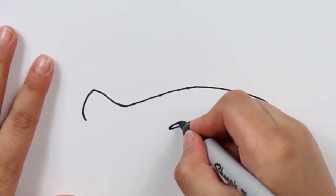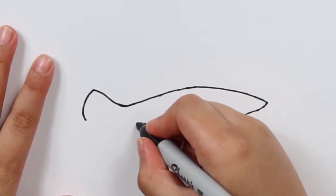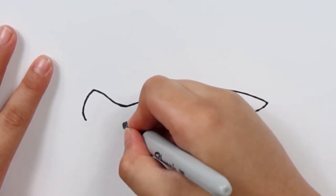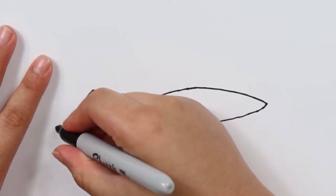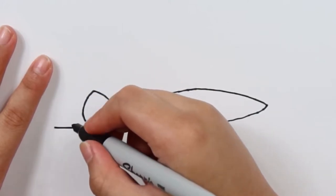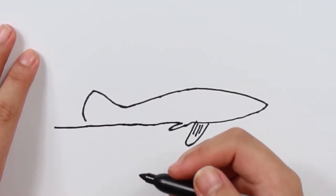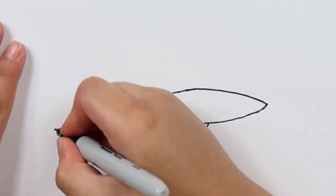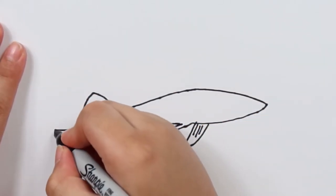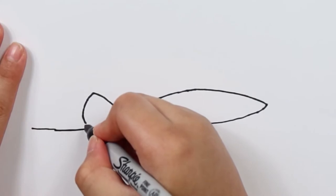Then just keep going forward, forward, forward. And then do not make this line touch that because if it does then you get a female swordtail, but we're drawing the male. So draw that signature sword that you see on their tail like that.